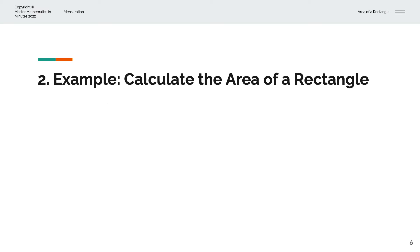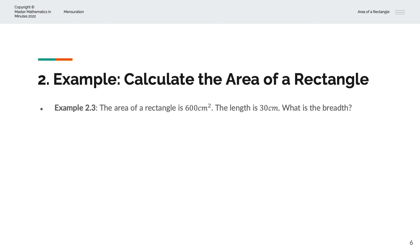In the third example, we're given the area of a rectangle is 600 centimeters squared, and we're also given the length is 30 centimeters. We're asked to calculate the breadth of the rectangle.